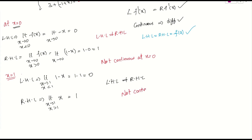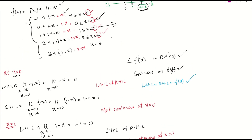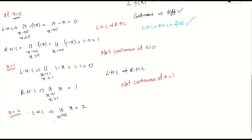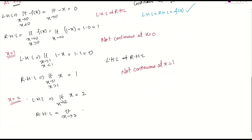At x = 2: LHL = limit as x→2⁻ of x = 2. RHL = limit as x→2⁺ of (1+x) = 1+2 = 3. LHL ≠ RHL, so the function is not continuous at x = 2.